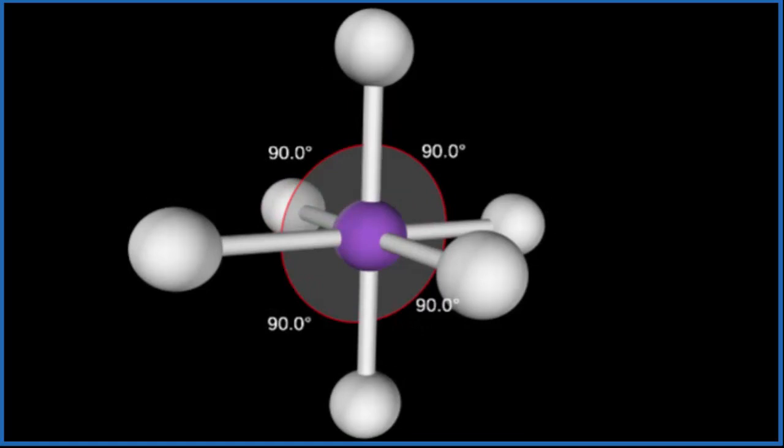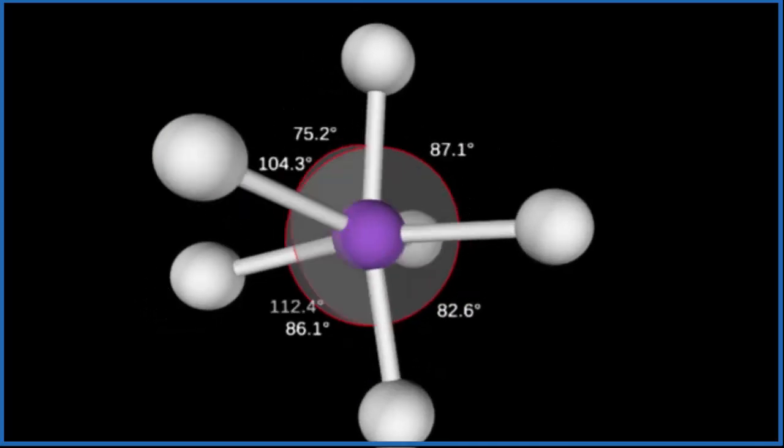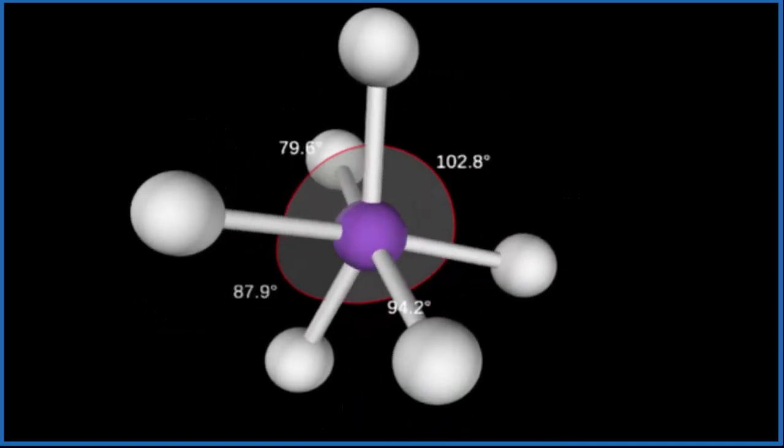If you wanted to know the electron geometry, that would also be octahedral because we don't have any lone pairs here on this central iodine atom. So the molecular geometry for IF6 plus is octahedral, bond angles of 90 degrees.